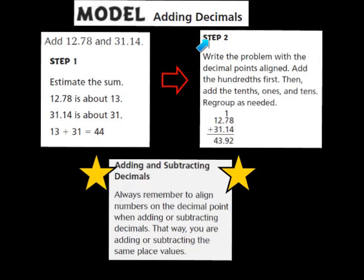Now let's look at step number two. Step two says to write the problem with the decimal points aligned. When I look at how my problem is written, I notice that my decimal points are lined up — your decimal points have to be aligned so you know you're adding the right place values together. We're going to add the hundredths first, then the tenths, the ones, and the tens, and regroup as needed.